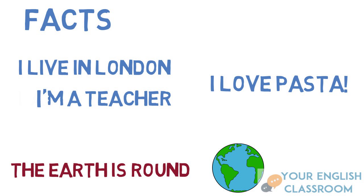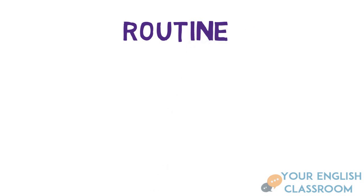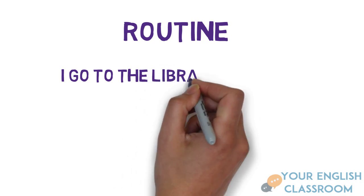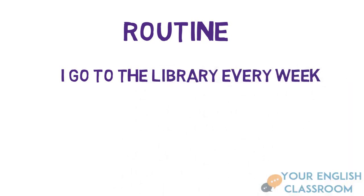So how do we identify a second time? Well, it has to be a routine. If it's a routine, then it's present simple tense. So for example, if I say, I go to the library every week. This is something you do continuously every week. Therefore, it's present simple tense.